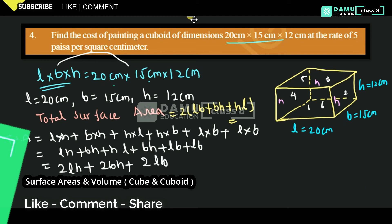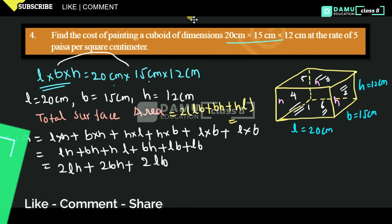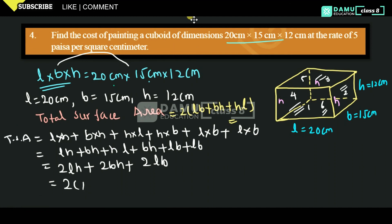I have calculated the area of front, back, top, bottom, and all the faces. Then you can take common 2 into (LH plus BH plus LB). So this is the formula for total surface area.